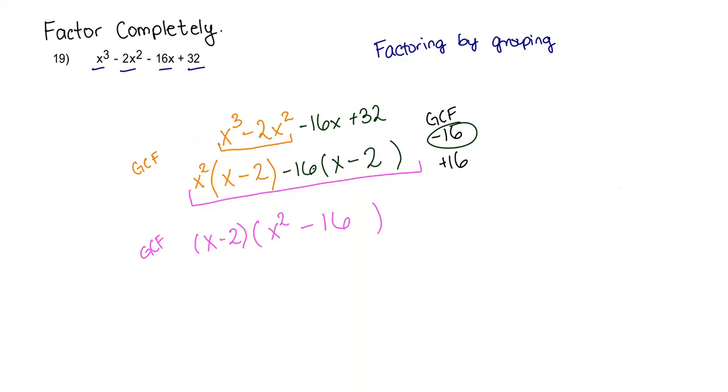So that's how you factor by grouping. But we're not done. And we're not done because we just so happen to have what's called a difference of squares right here.